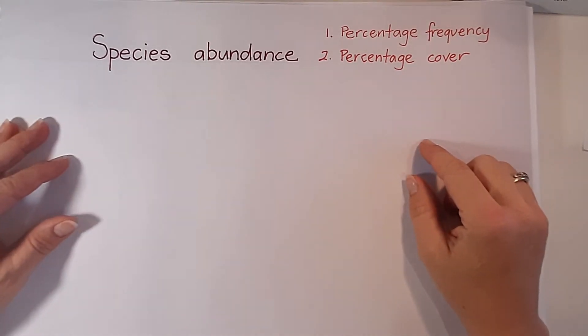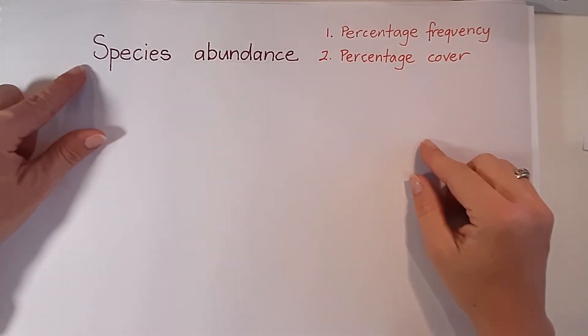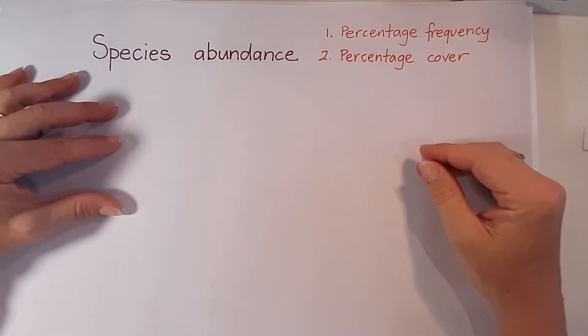This video talks us through what species abundance is. In other words, it's how many individuals of a species are present in a certain sample area.